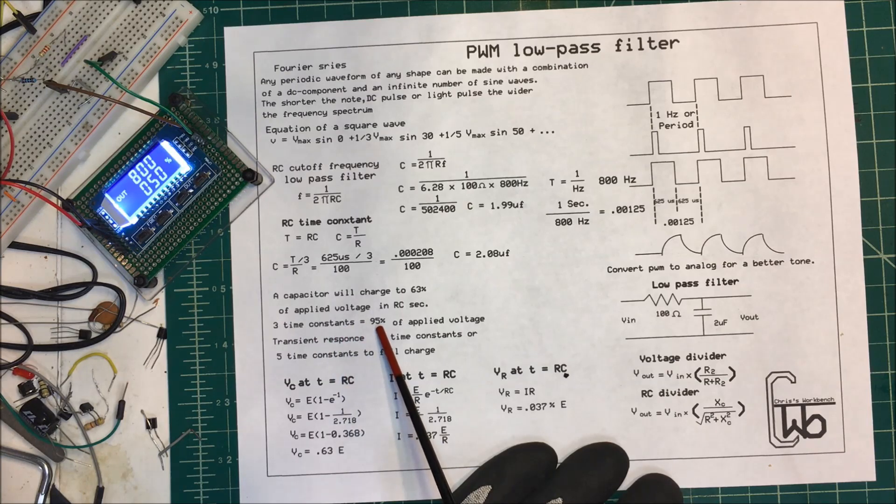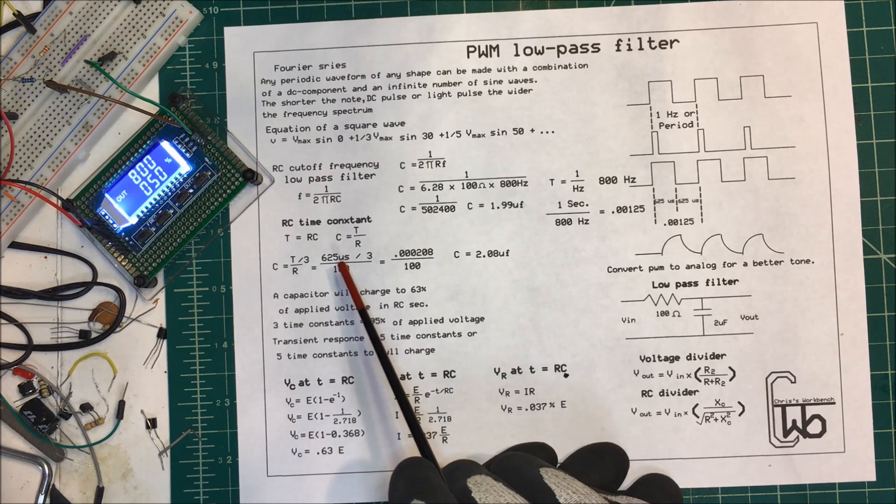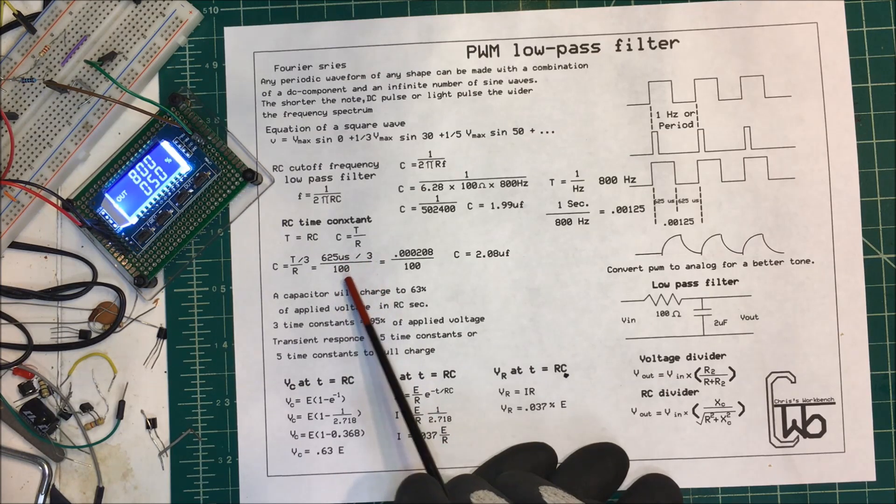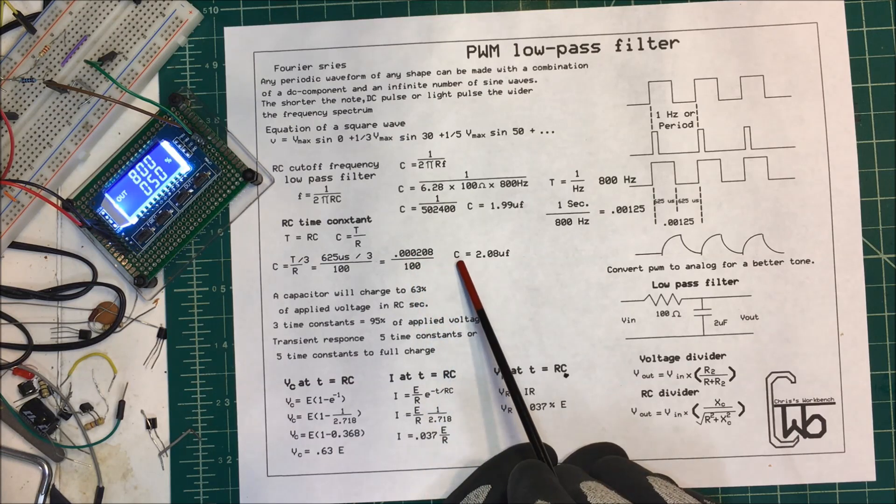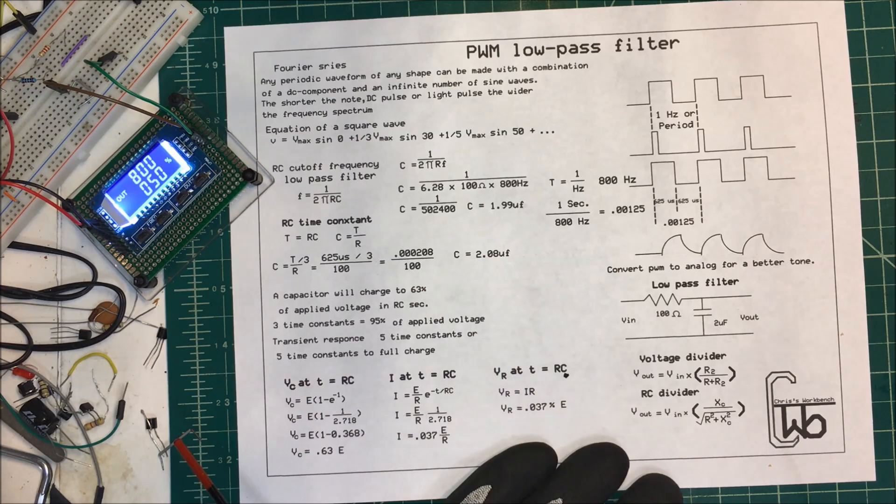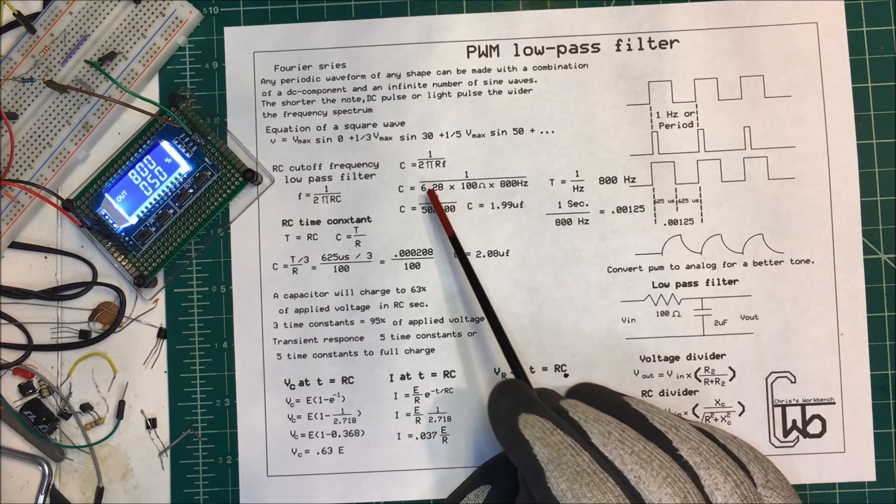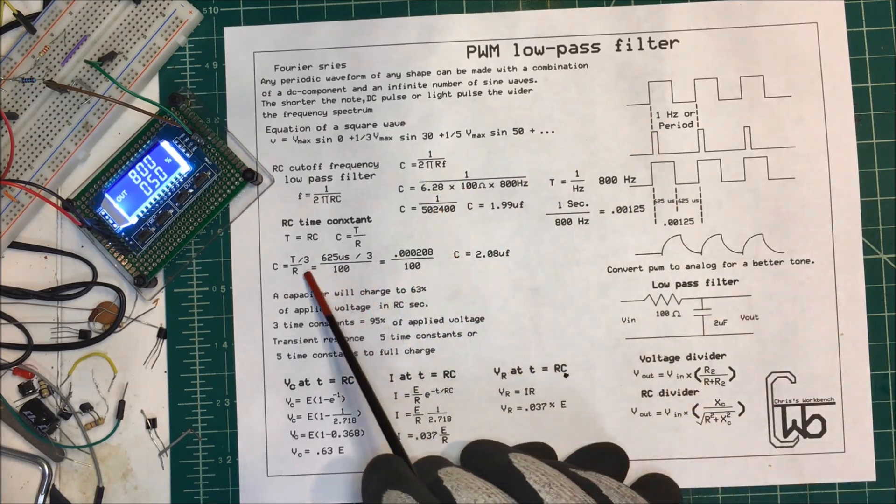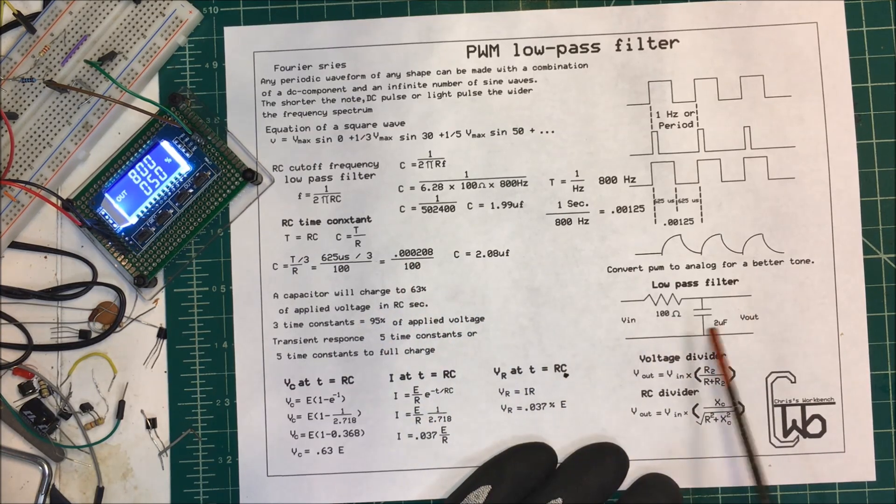Three time constants, it rises up to about 95% of the applied voltage. The transient response is five time constants to a full charge. Rarely do we try to get it up to a full charge - we're going to go 90, 95%. So I'm just going to take this time, divide it by three, and then divide that by 100. If we do that, it comes out to 2.08 microfarad capacitor that we need and 100 ohms. Either way we do this with the low-pass filter formula or just with our time constant, it still comes out to about 2 microfarads at 100 ohms.